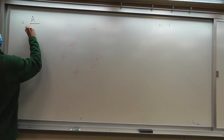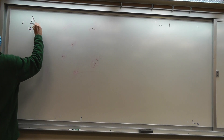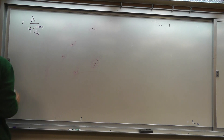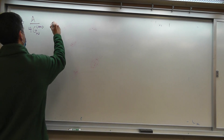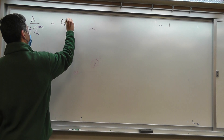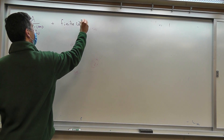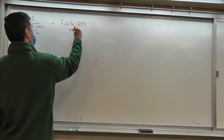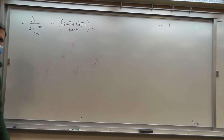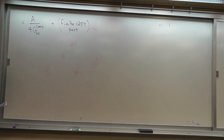So in terms of the renormalized Newton's constant, it's A over 4G_renormalized plus a finite QFT part. That's what we believe happens. I say it's what we believe happens, because this has really only been done in detail in a few examples, like free scalars.